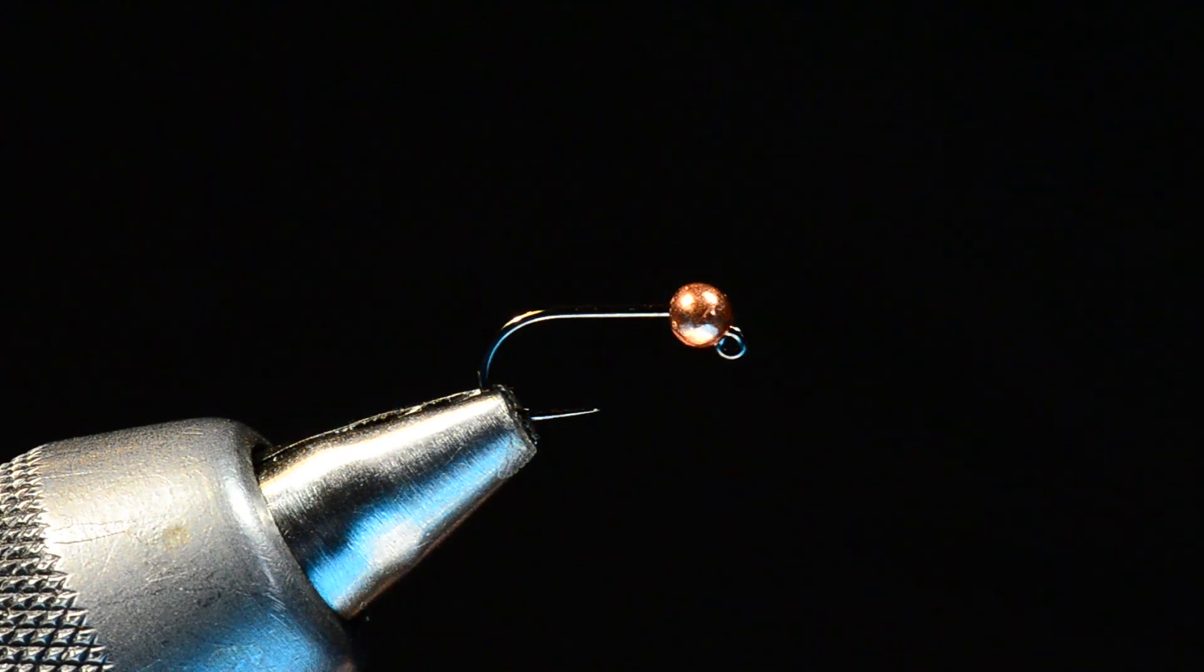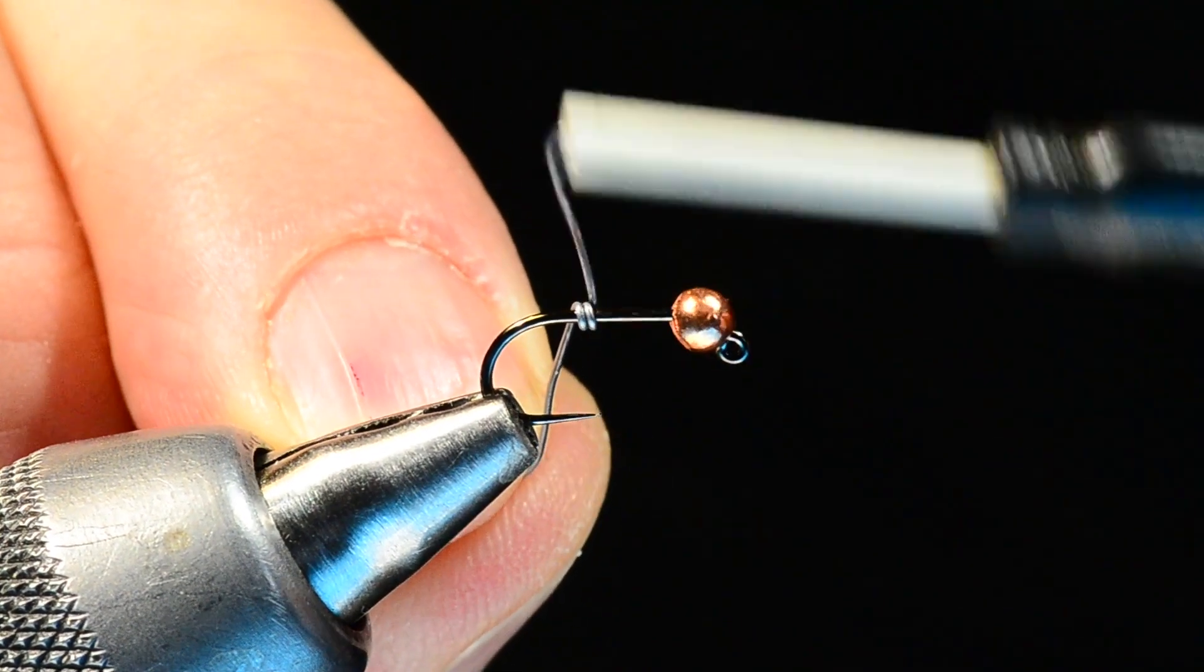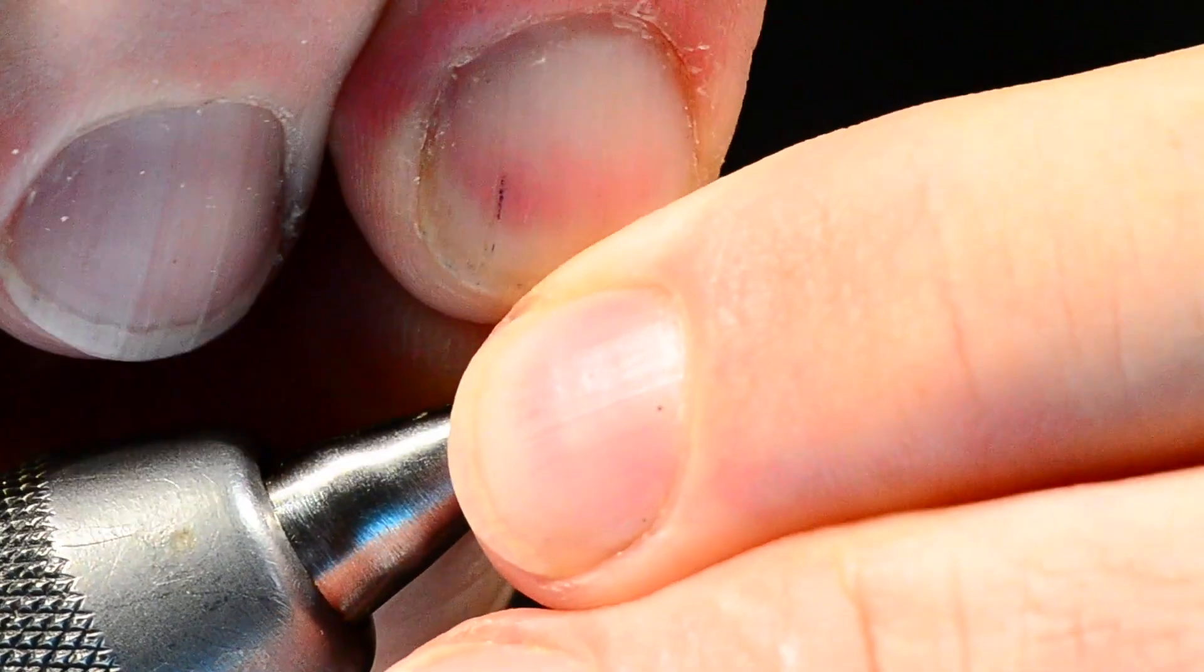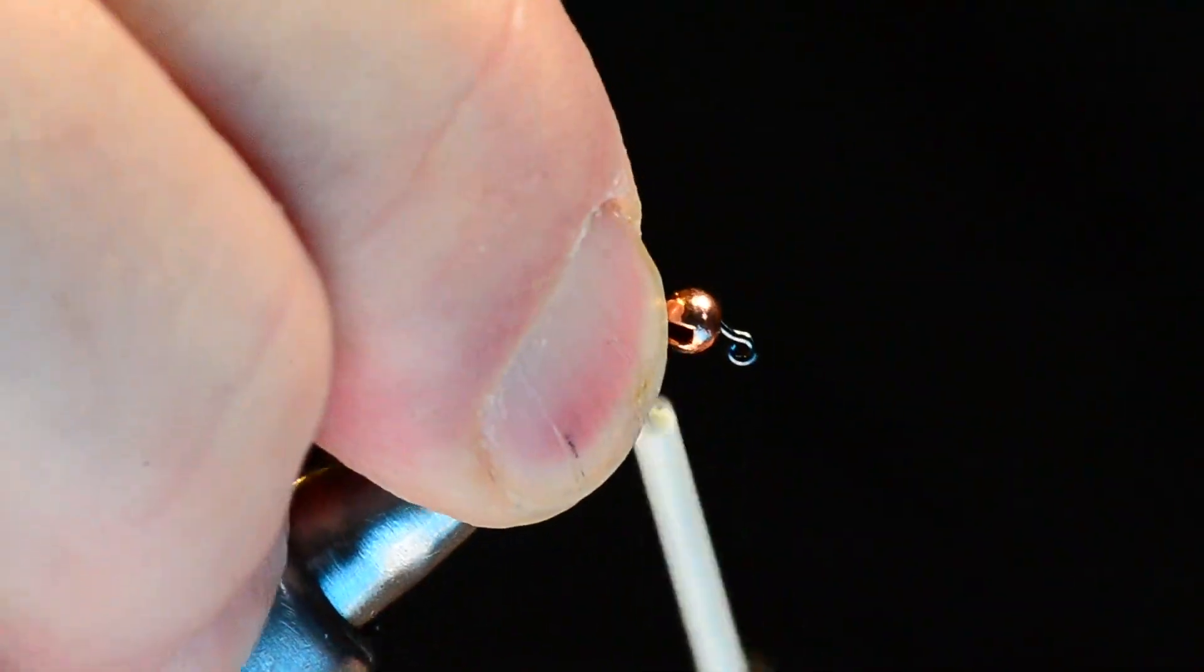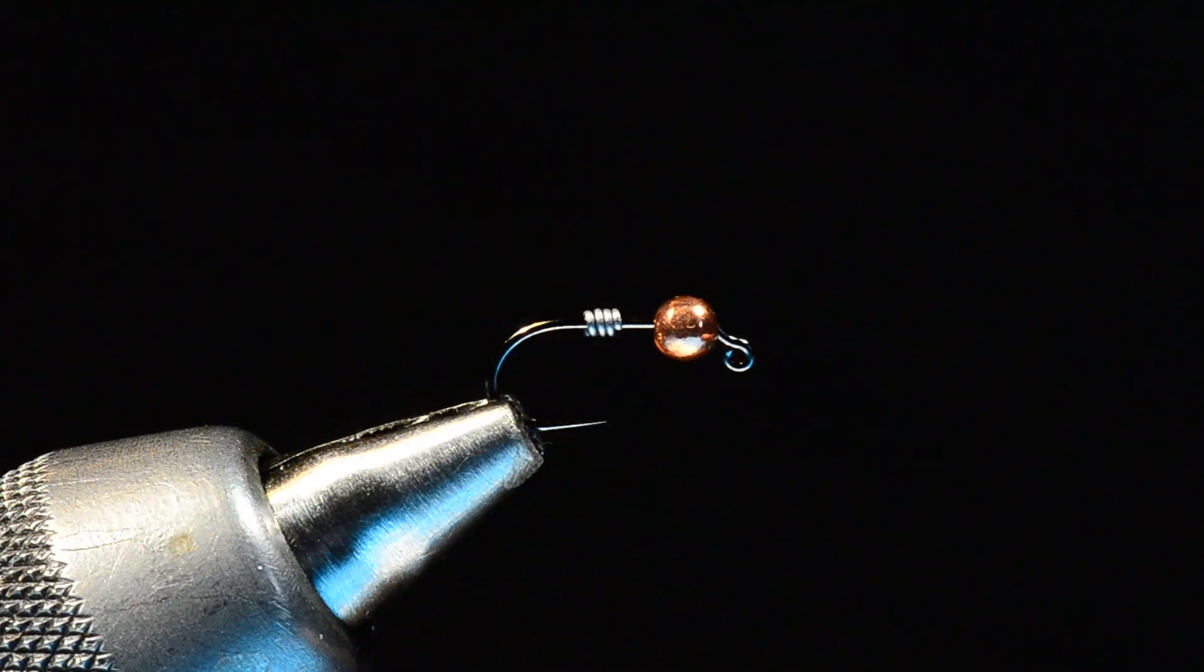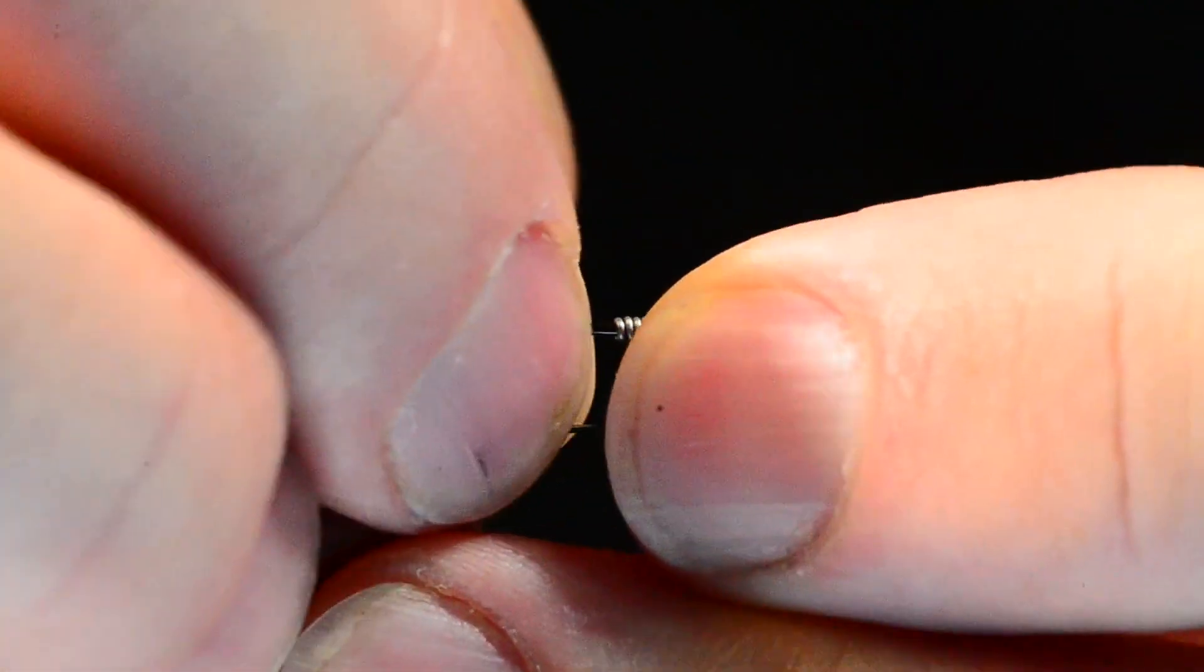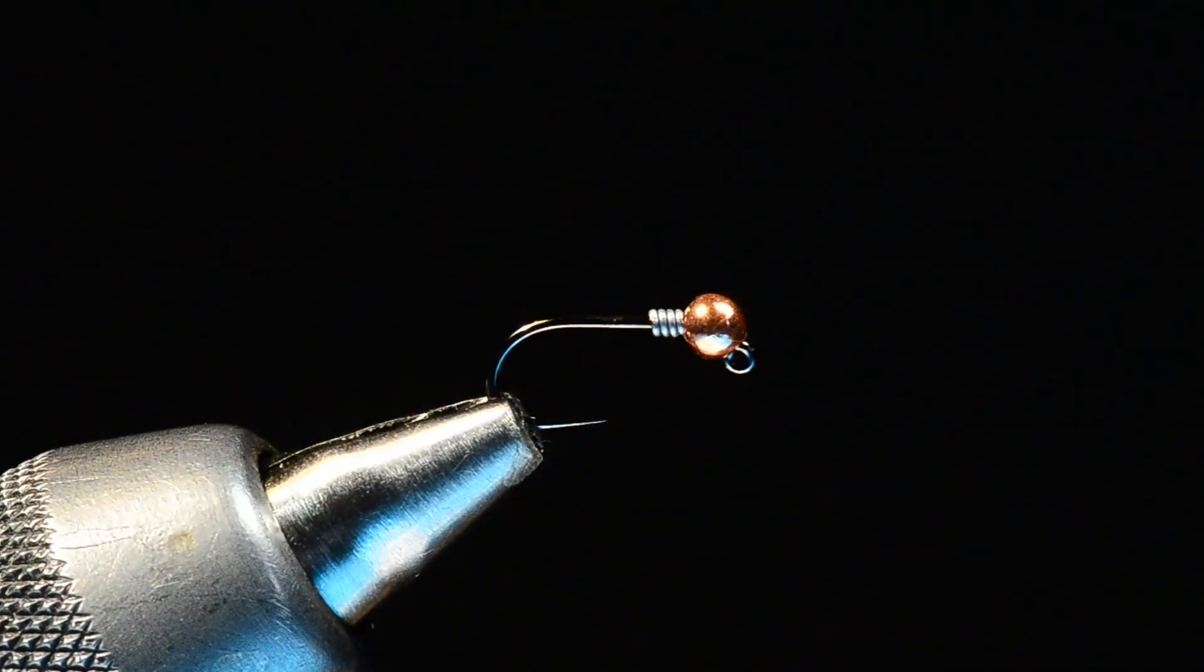I'm going to start off with some 15 thousands lead wire and I'm just going to make four turns. I'll break the ends off there and then take those four turns and push them up against the bead. That's going to add some additional weight and keep the fly down in the water column.